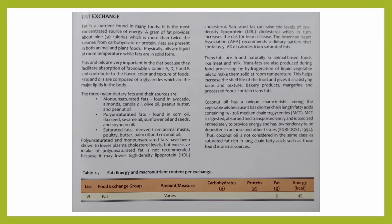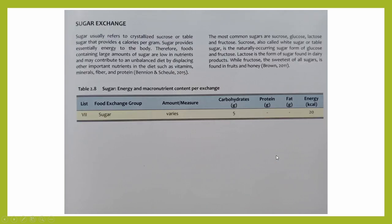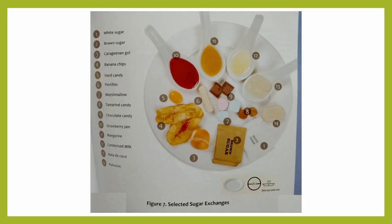For the fat exchange, it's still the same — 5 grams of fat will give you 45 kilocalories. These are examples of the selected fat exchanges. And for the sugar exchanges, it's still the same — every 5 grams of sugar will give you 20 kilocalories. This is the selected sugar exchanges.